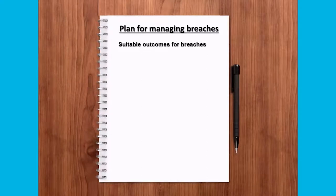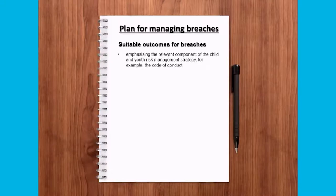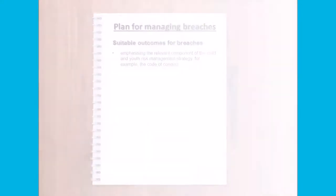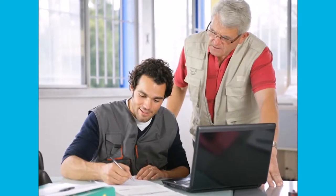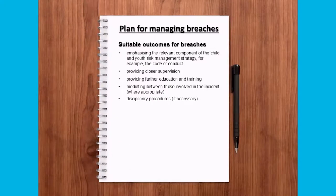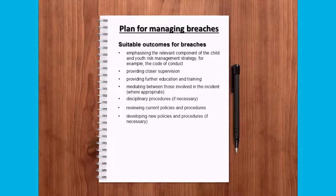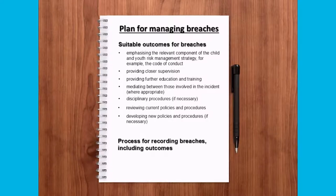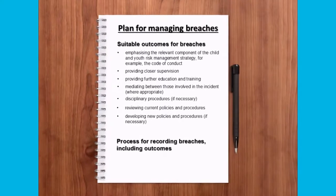Suitable consequences and outcomes for breaches should also be outlined. Depending on the nature of the breach, outcomes might include emphasizing the relevant component of your child and youth risk management strategy, providing closer supervision, further education and training, mediating between those involved, disciplinary procedures if necessary, and reviewing or developing new policies and procedures. You must also document a process for recording breaches including outcomes. It helps to pre-classify breaches and their corresponding consequences.